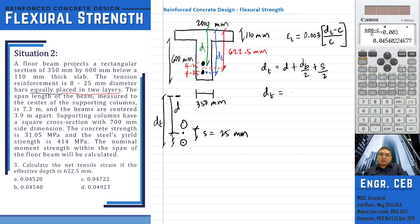So we have D is 622.5 plus 25 over 2 plus 25 over 2. Therefore, D sub T is 647.5 millimeters.